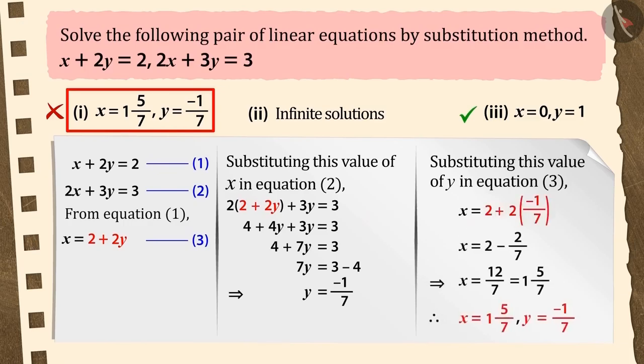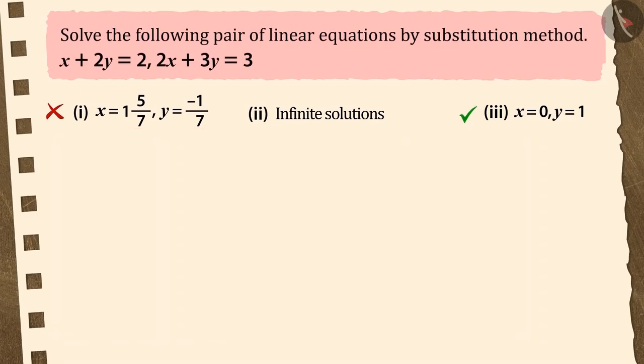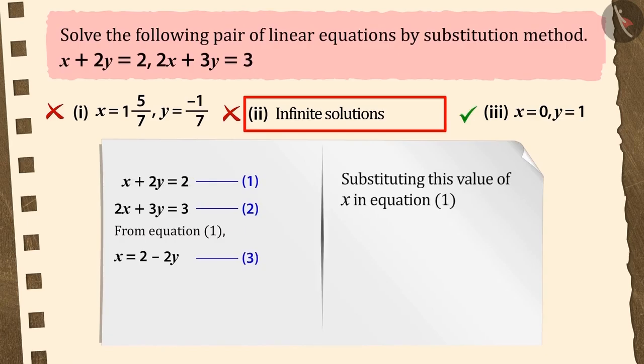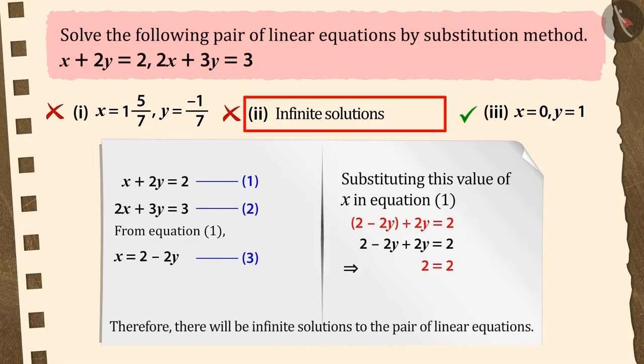If you have selected option 2, then it's a good try, but this is also an incorrect answer. Because to solve the question, you expressed x in equation 1 in terms of y, and you replaced the value of x in equation 1 only. This is how you got an equation without any variable. That indicates that the pair of linear equations has infinite solutions, which is why your answer is wrong.